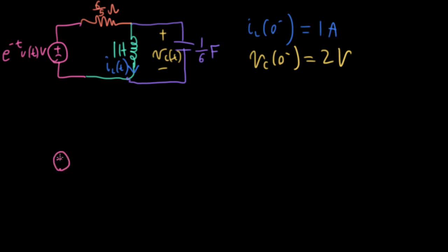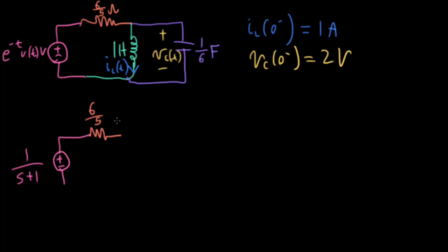We need to convert this into the Laplace domain. We'll replace the voltage source with its Laplace domain equivalent. The Laplace transform of this decaying exponential is 1 over (S+1). Then we have a resistance of 6/5. Past this point I'm not really going to write down the units, because they get a bit weird and confusing — just make sure you're expressing everything in ohms, farads, and henrys.